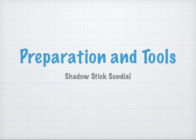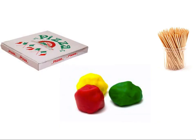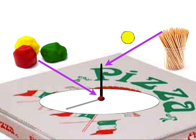Preparation and tools. You'll just need a shadow stick sundial. You can take a pizza box, maybe some clay, a toothpick or a piece of uncooked spaghetti. If you take a sheet of paper, stick it on the top of the pizza box, and then jam in a toothpick, maybe stabilize it with some clay, you've got yourself a shadow stick sundial.